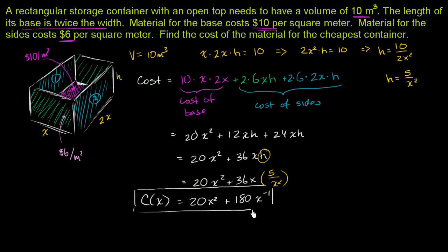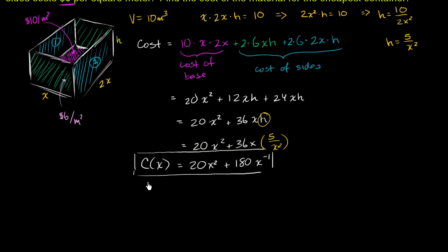Now we're ready to optimize. We find critical points by taking the derivative and setting it equal to zero or checking where it's undefined. The derivative of cost with respect to x is 40x minus 180x to the negative second power.